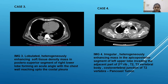Case 4 shows an image of an irregularly heterogeneously enhancing mass in the apicoposterior segment of the left upper lobe, invading the adjacent part of the second rib, T2, T3 vertebral body, and the costovertebral junction of the second vertebra, suggesting a Pancoast tumor.